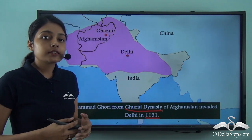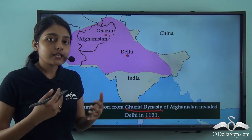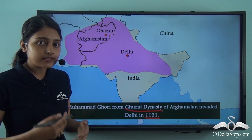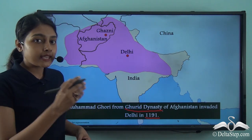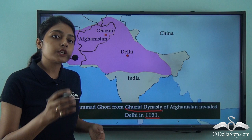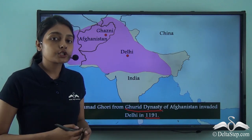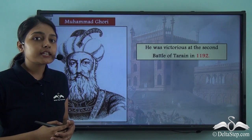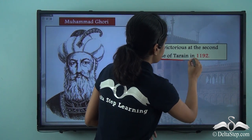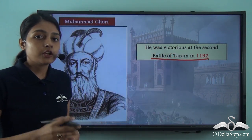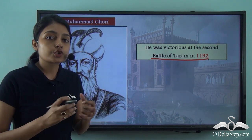This marked the beginning of Turkish rule in India. So, what happened right after this — after Muhammad Ghuri came to Delhi, took control of it, and expanded his Ghurid dynasty? It was the second Battle of Tarain, fought in 1192, that gave Muhammad Ghuri control of Delhi.